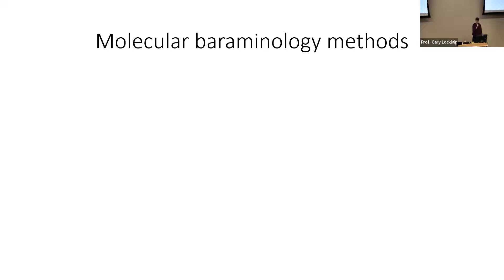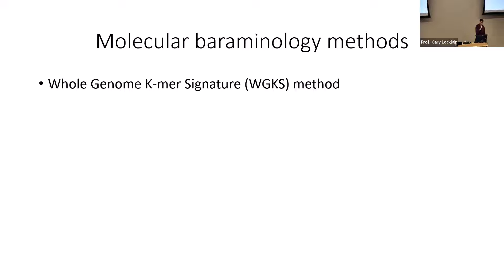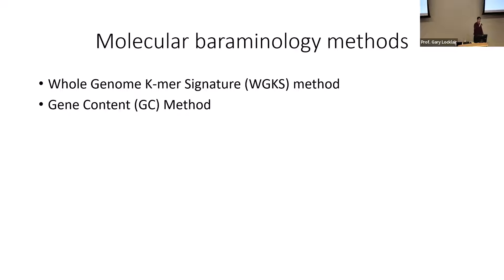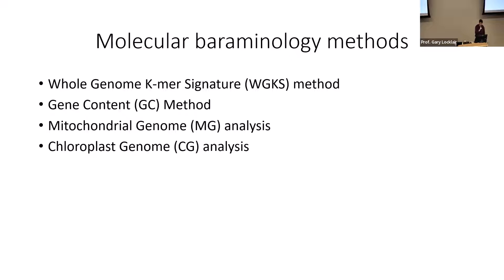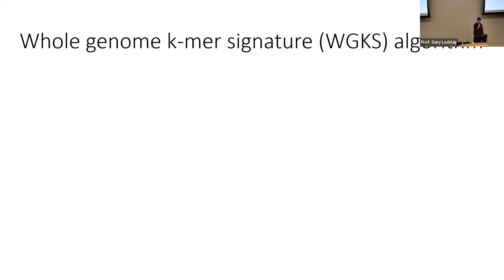One method of molecular baraminology is the whole genome k-mer signature method, which analyzes DNA signatures — short DNA 'words' called k-mers distributed throughout whole genome sequences. A k-mer is a short stretch of DNA letters (A, C, G, T); for example, a tetramer is four letters long. There is also the gene content method, which compares what percentage of genes two species have in common.